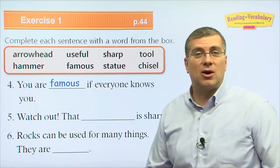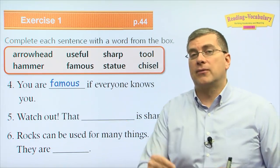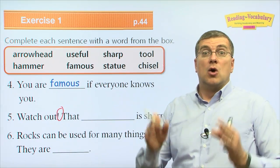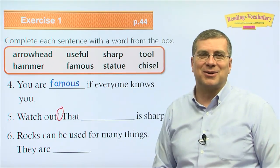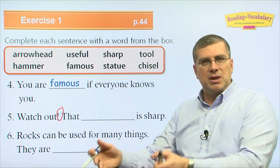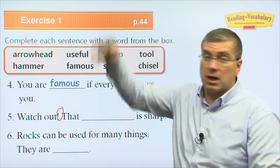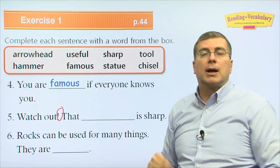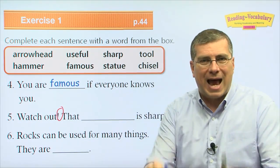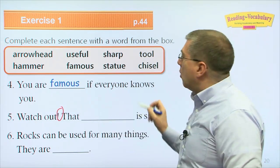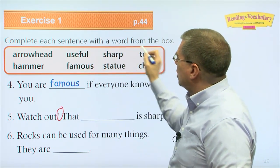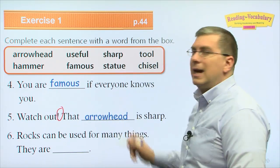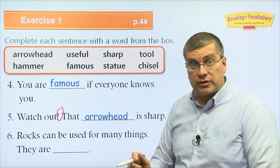Number five: watch out! Watch out is like 'be careful,' but with an exclamation mark it's more urgent. 'Be careful' means take care later; 'watch out' means right now — something is happening. Watch out that blank is sharp. What can be sharp here? Probably the arrowhead. Watch out — that arrowhead is sharp. Be careful if you're going to shoot the bow.